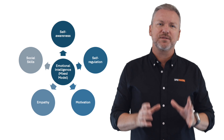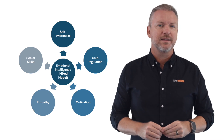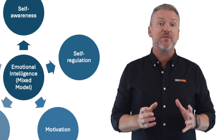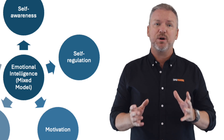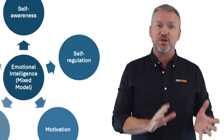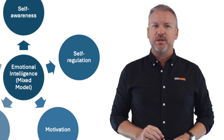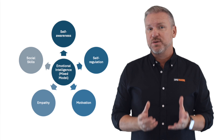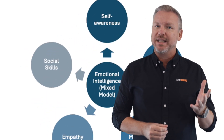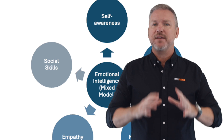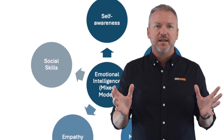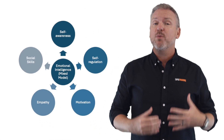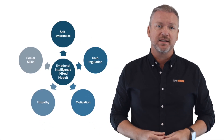Next is self-regulation, which involves controlling or redirecting your disruptive emotions and impulses and adapting to changing circumstances. How good are you at reacting positively to change? Next is social skill: managing relationships in order to get along with others. This doesn't mean you have to have a large circle of friends — instead, it looks at the way people respond to you in social settings. Is it more or less positive than you'd like?